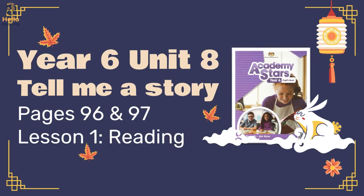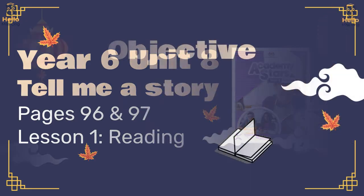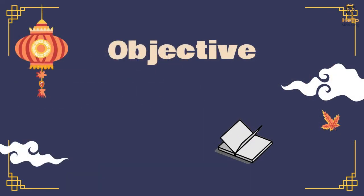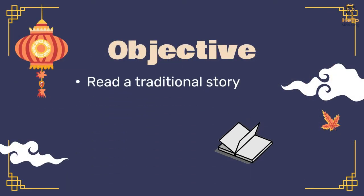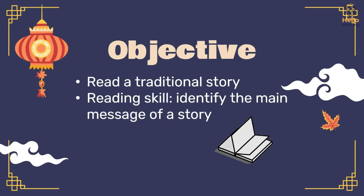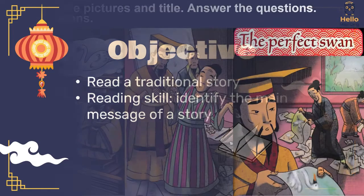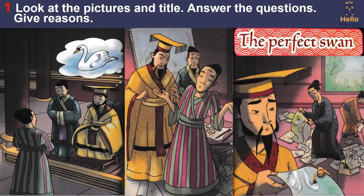Unit 8, Lesson 1: Reading. Objective: read a traditional story. Reading skill: identify the main message of a story. Activity 1: look at the pictures and title, answer the questions.